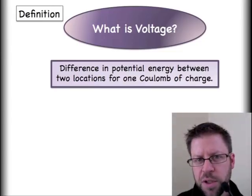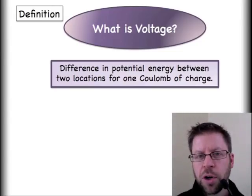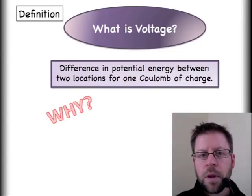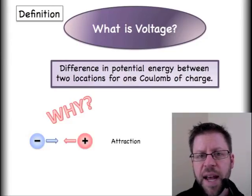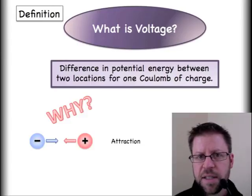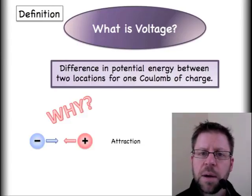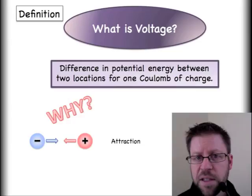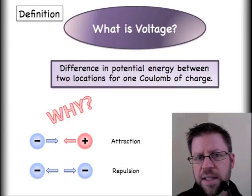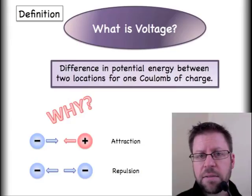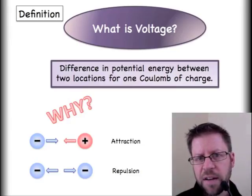Why is there a difference in this potential energy? That's because we will take our negatively charged electrons, and if we put them near positively charged protons, they're attracted to one another. And if we have our electrons near other electrons, they repel each other because they both have negative charges.